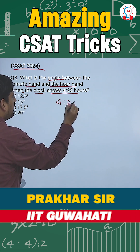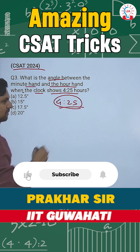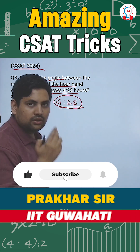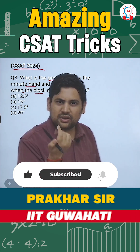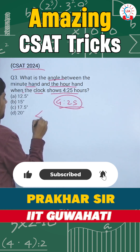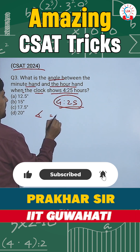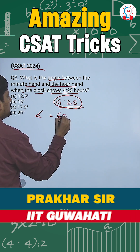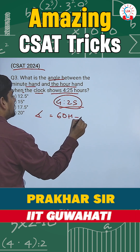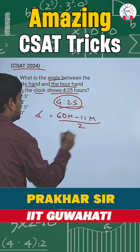What is the angle between the minute hand and hour hand when the clock shows 4:25? The time is 4:25 and angle is being asked from you. How do you find the angle? You know the formula for angle between hour hand and minute hand? It is 60h minus 11m by 2.